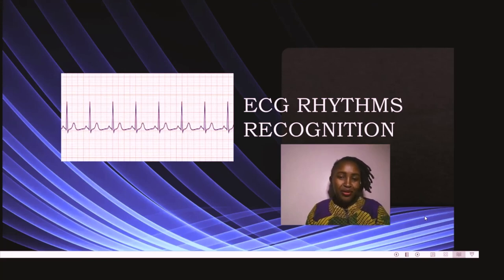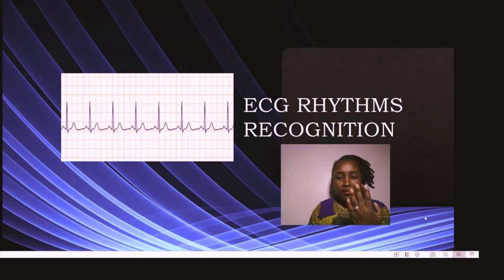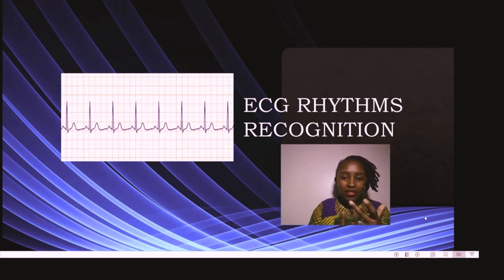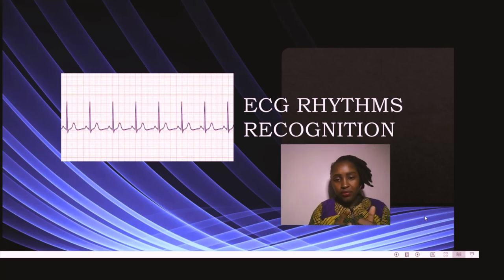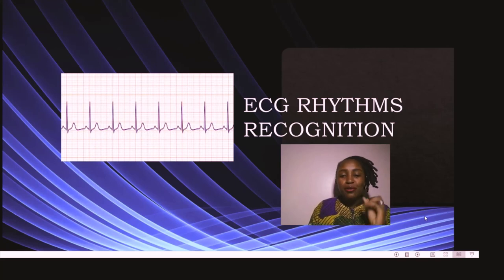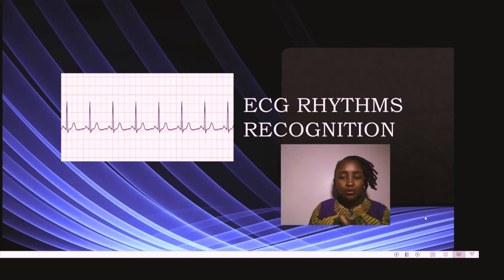Thank you for watching through this video on ECG recognition. The five steps to remember: Step one — identify the rhythm, whether regular or irregular. Step two — calculate the rate using small squares, big squares, or QRS complexes. Step three — analyze the P wave: is it present, is it of normal morphology, and is it followed by a QRS complex? Step four — the PR interval: measure from where the P starts to where the R starts to describe the rhythm. Step five — the QRS complex: is it wide or narrow? Narrow means the problem is from the atria or above the ventricles; wide means it is from the ventricular side.